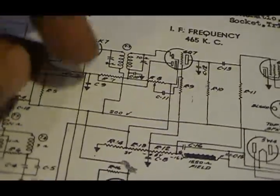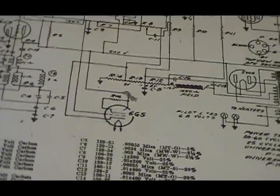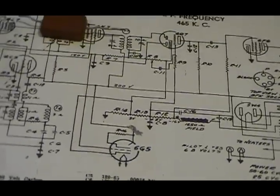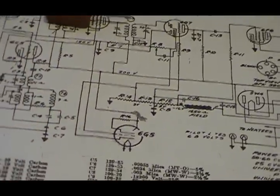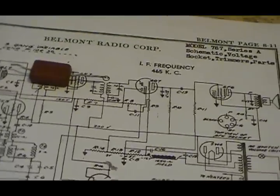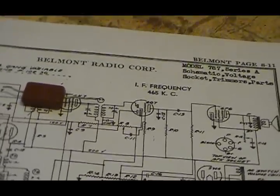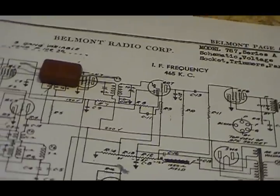If nothing else, just for checking the micas. You take one lead loose and check it. And if it checks fine, put it back in, don't worry about it. But I do check them. And of course, I check resistors, make sure all the resistors are within tolerance. But the paper and electrolytics, I don't even mess with testing. I just go ahead and replace those.